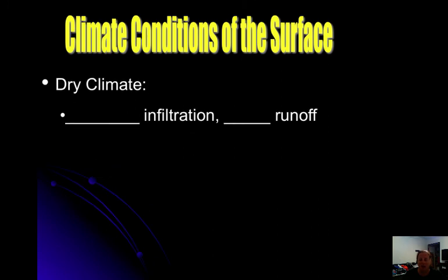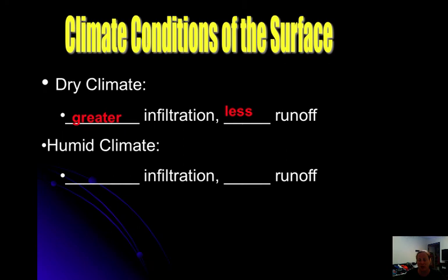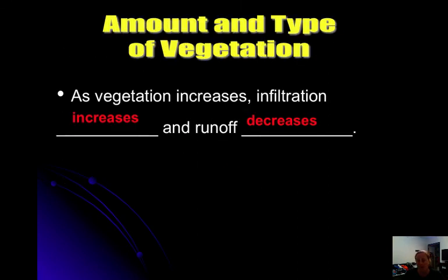Climate conditions: in a dry climate, you'll have greater infiltration and less runoff. In a humid climate, there will be less infiltration and more runoff because there is already water in the ground. In a dry climate, water flows right through since the ground beneath is not already full. Vegetation also plays a role — plants tend to keep soils less packed, so infiltration rate increases and runoff decreases. Trees and plants help the area allow water to infiltrate.